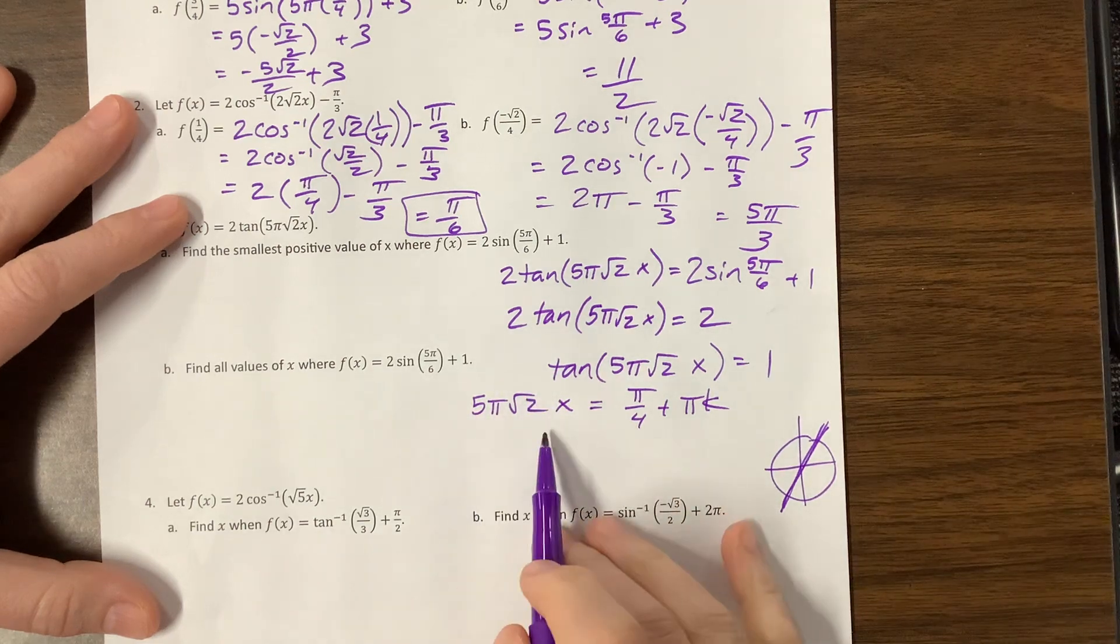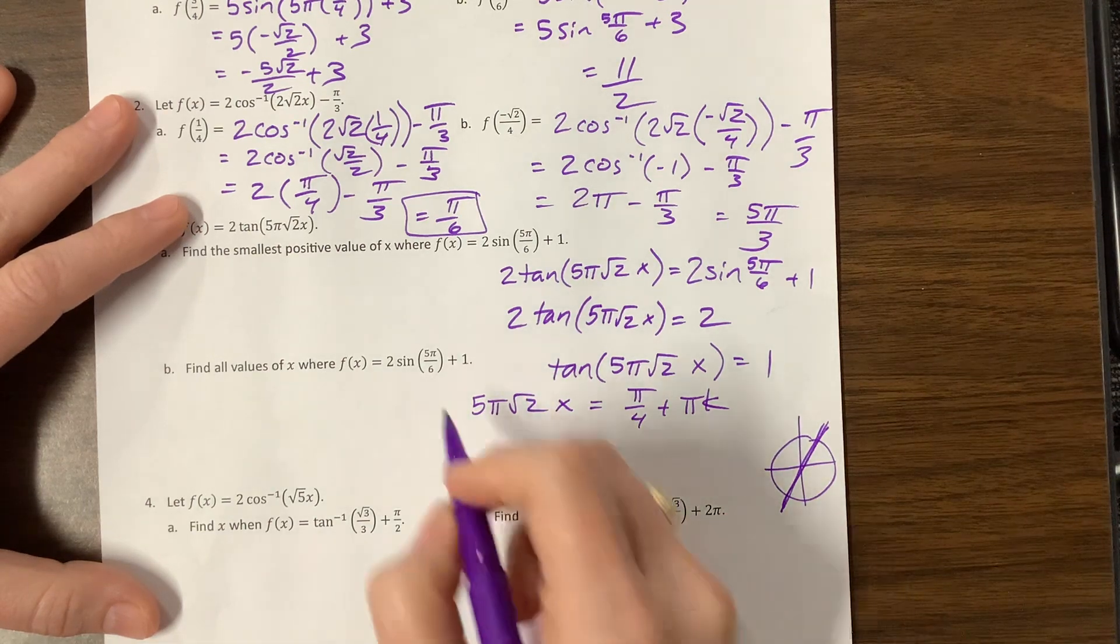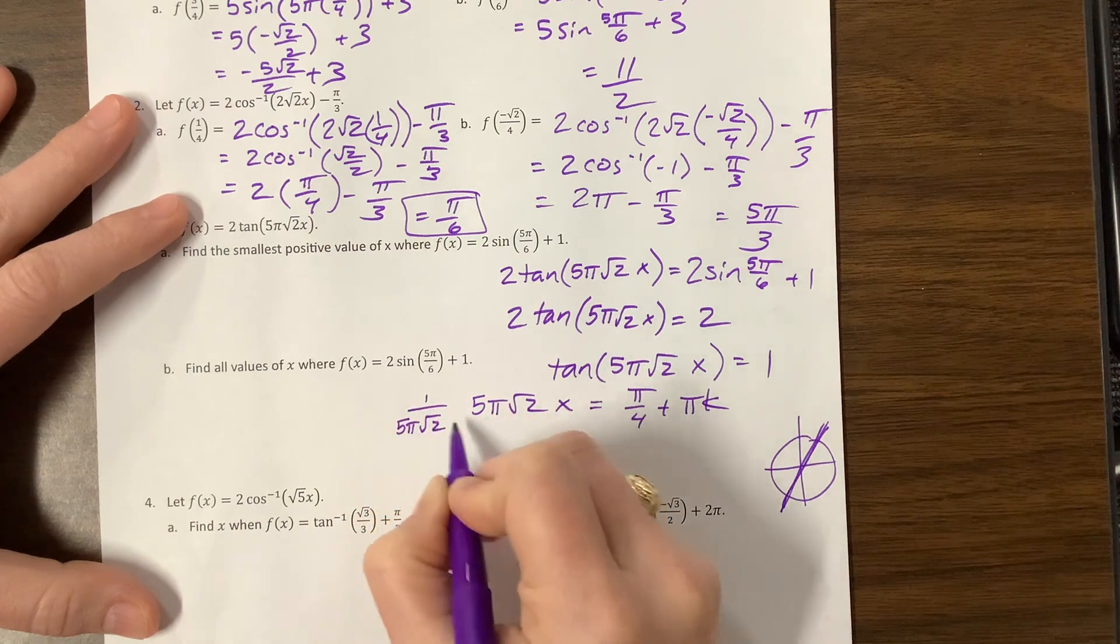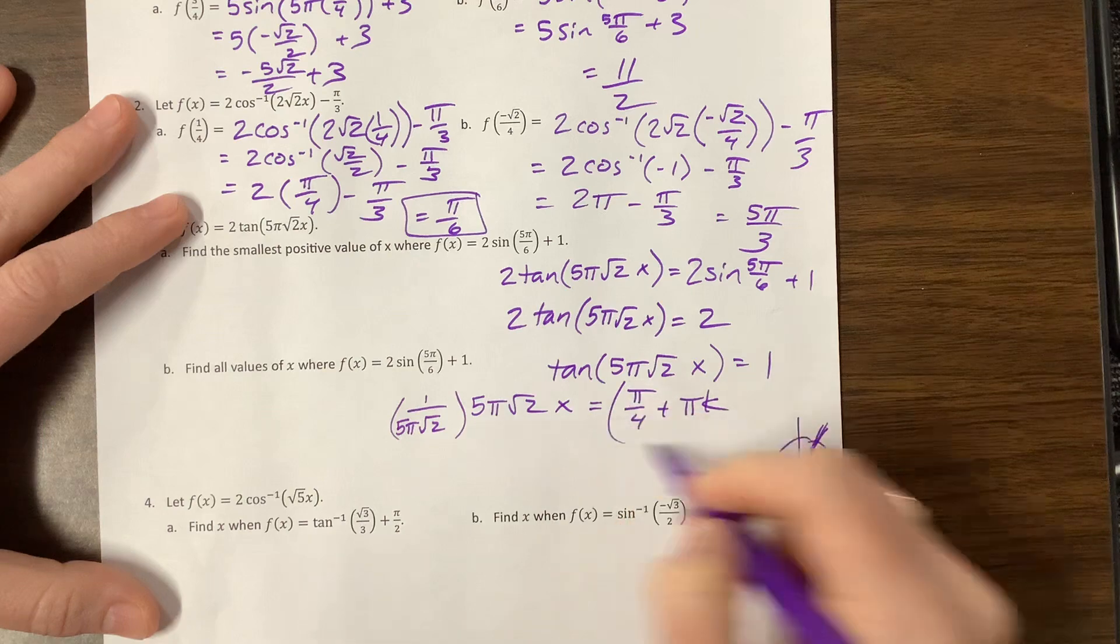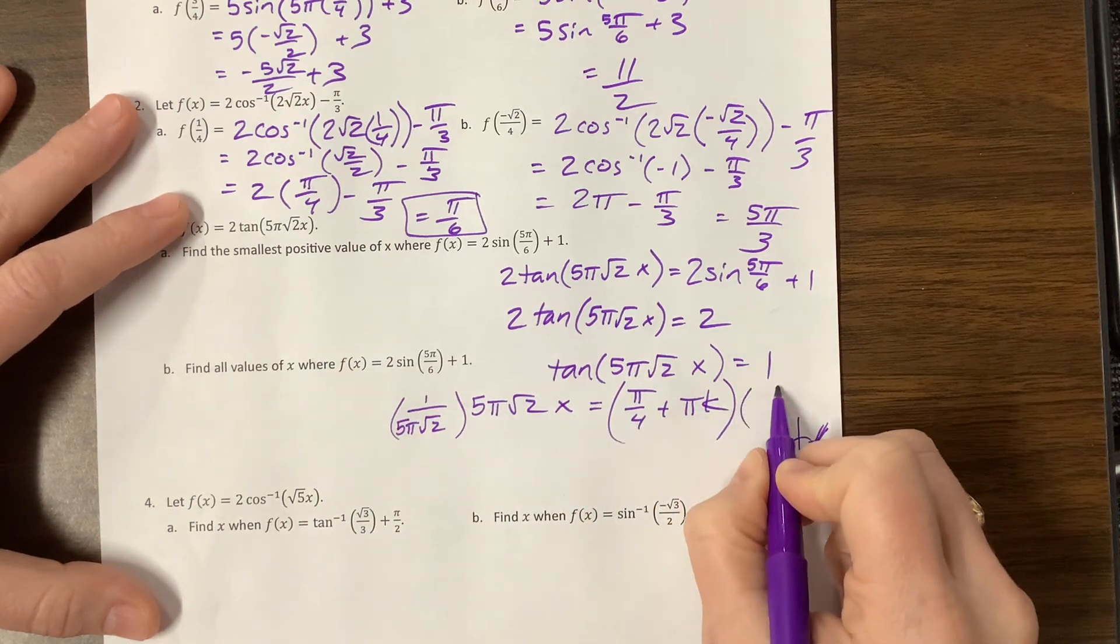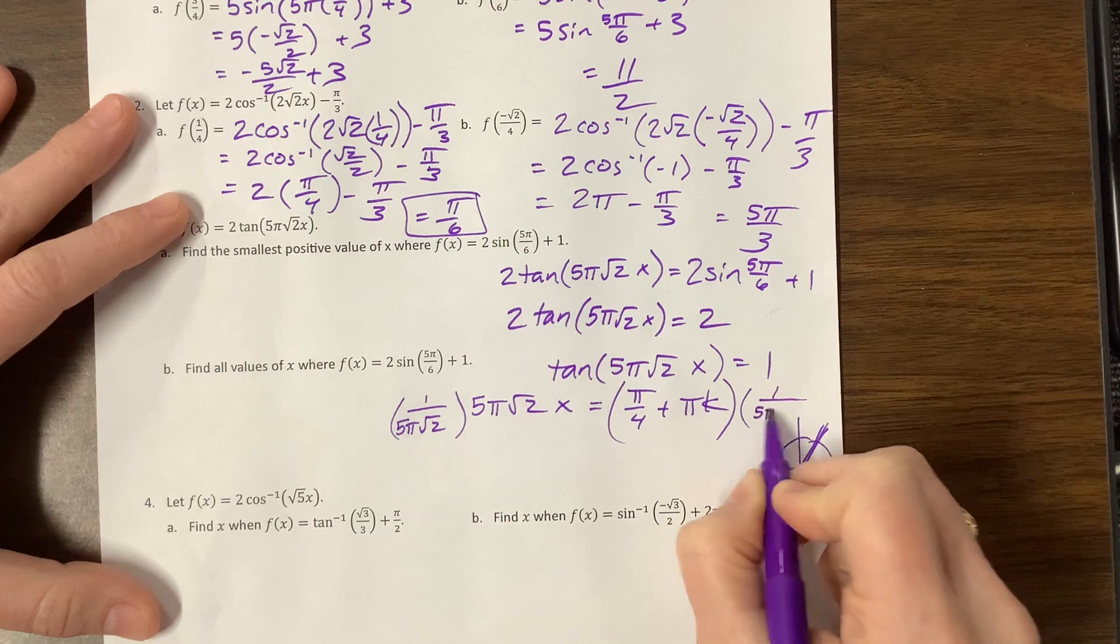Now I have to get rid of all this mess so that I can solve for x. So I'm just going to multiply by 1 over 5π√2, which is gross, but there we go. If I do that on this side, I have to multiply by the entire side, which is 1 over 5π√2.